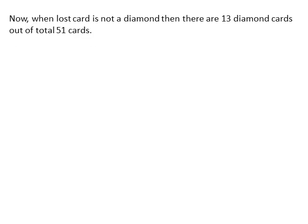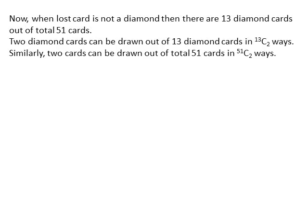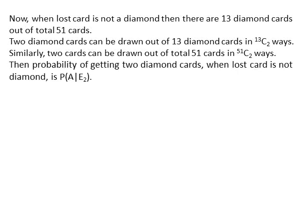When the lost card is not a diamond, there are 13 diamond cards out of 51 total cards. Two diamond cards can be drawn from 13 in C(13,2) ways, and two cards from 51 in C(51,2) ways. So P(A|E2) = C(13,2) / C(51,2), and after simplification, P(A|E2) = 26/425.